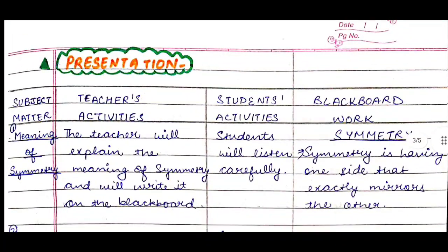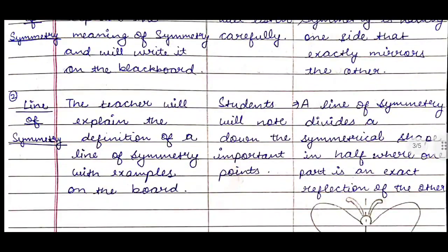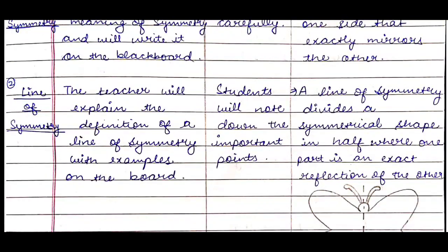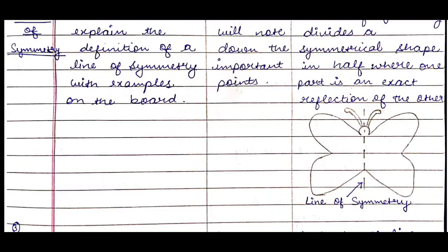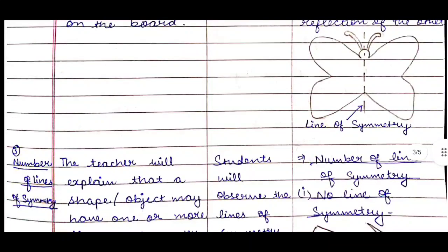The presentation part is the actual teaching part. We make four columns: subject matter, teacher's activities, students' activities, and blackboard work. First teaching point is the meaning of symmetry. The teacher will explain and write on the blackboard; students will listen carefully. Blackboard work: write 'Symmetry' as a heading and its definition — symmetry is having one side that exactly mirrors the other. Second teaching point is line of symmetry: a line of symmetry divides a symmetrical shape in half where one part is an exact reflection of the other. Draw the butterfly and mark the line of symmetry on the board.